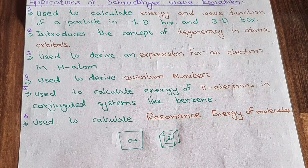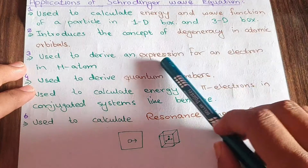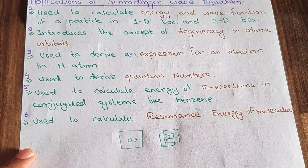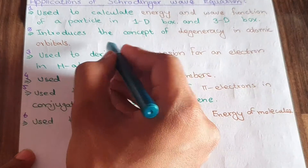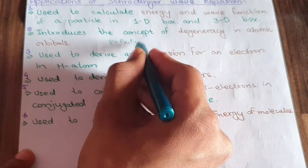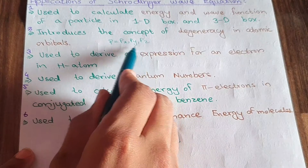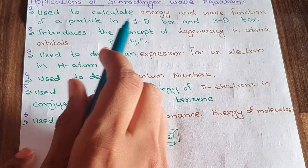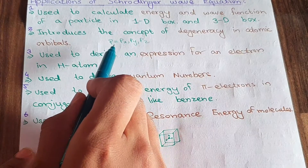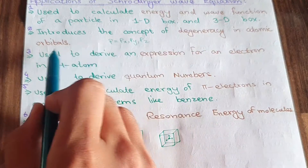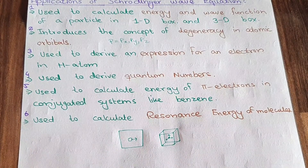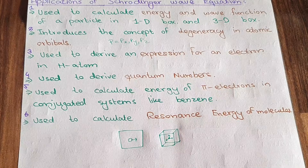Point number two: the Schrödinger wave equation also introduces the concept of degeneracy in atomic orbitals. Atomic orbitals include s, p, d, and f. If I take the p atomic orbital, it equals px, py, and pz. These three — px, py, and pz — are degenerate atomic orbitals, meaning all three have the same energy.